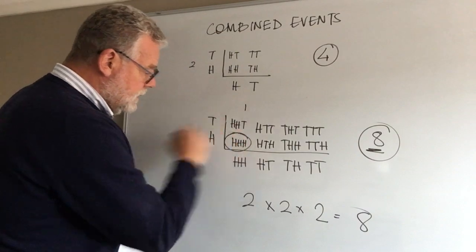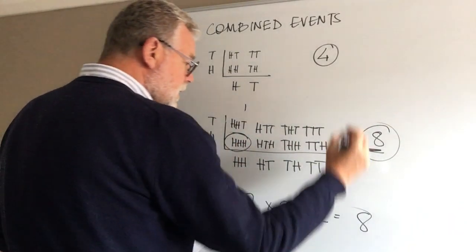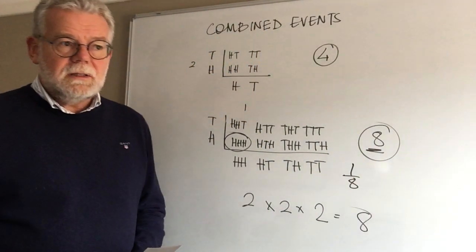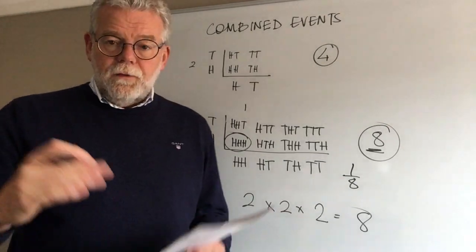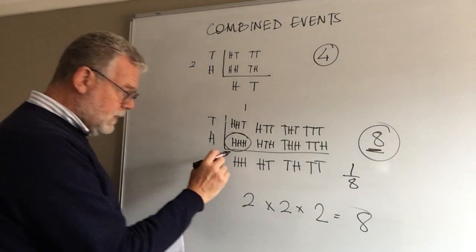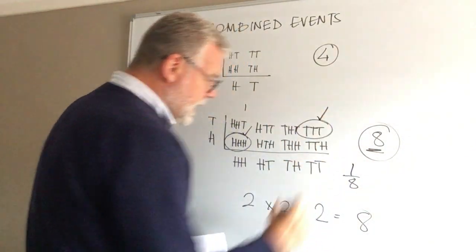When I ask what's the probability of getting everything as heads, the answer of course would be one over eight. Sometimes the question says, what's the probability of all the coins being the same? This time we've got to think, well, that applies and so does that.